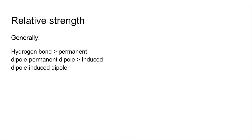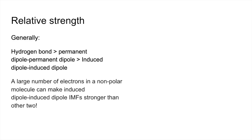To finish, the relative strength of the three types of intermolecular force: in general, hydrogen bonds are the strongest, permanent dipole-permanent dipole are intermediate strength, and induced dipole-dipole are the weakest. However, if you've got a large number of electrons in a non-polar molecule, the induced dipole forces can actually become stronger than the other two.